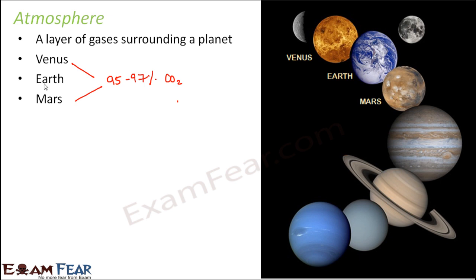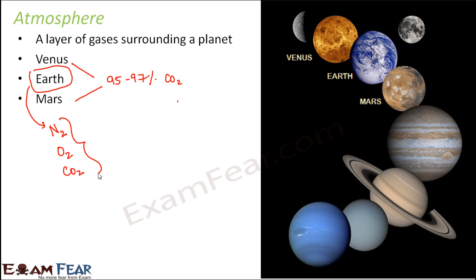On Earth, carbon dioxide is present in a very small amount — around 0.03% — while nitrogen is the maximum component and oxygen makes up approximately 21%. Oxygen is very important for different life forms' survival, and that is why life exists on Earth. This shows that the composition of atmosphere plays a crucial role in deciding whether a planet can support life.